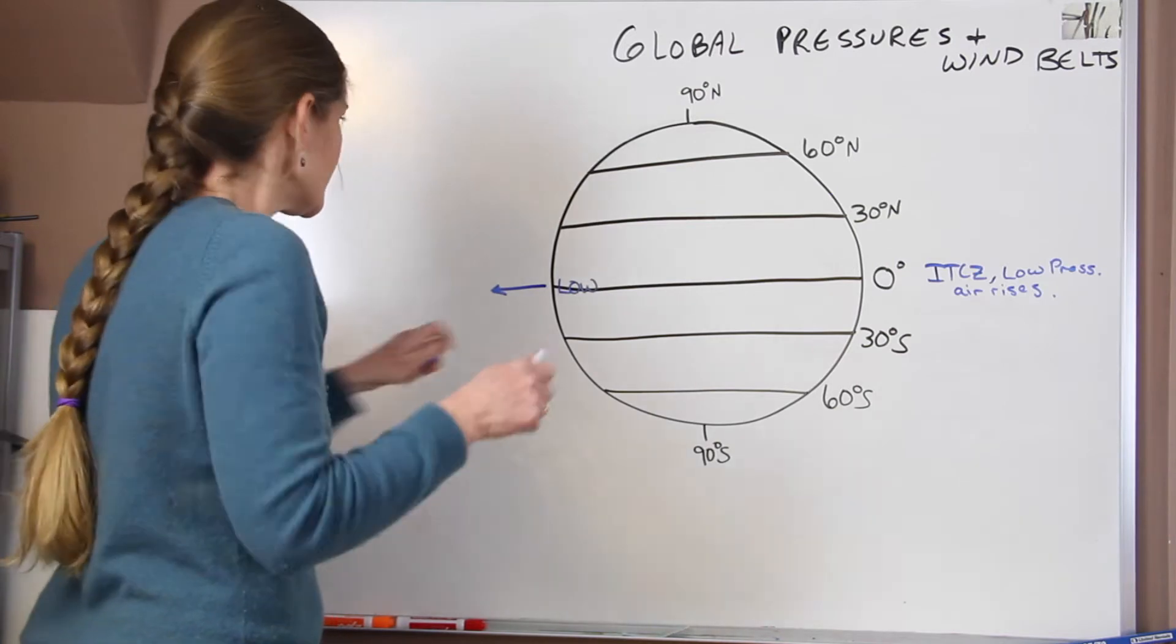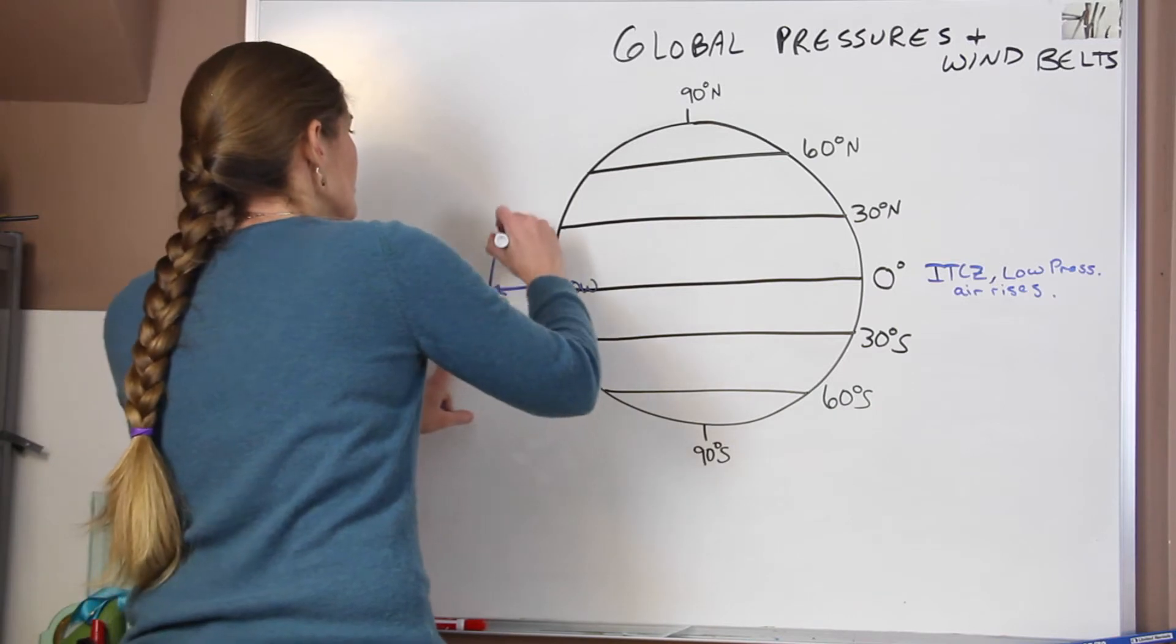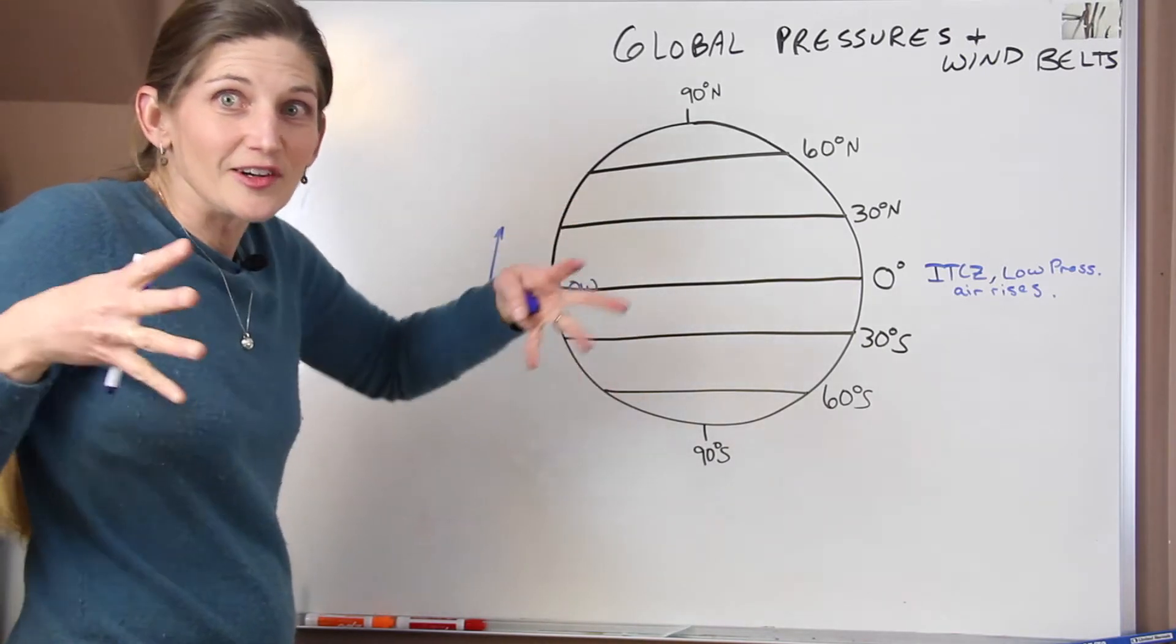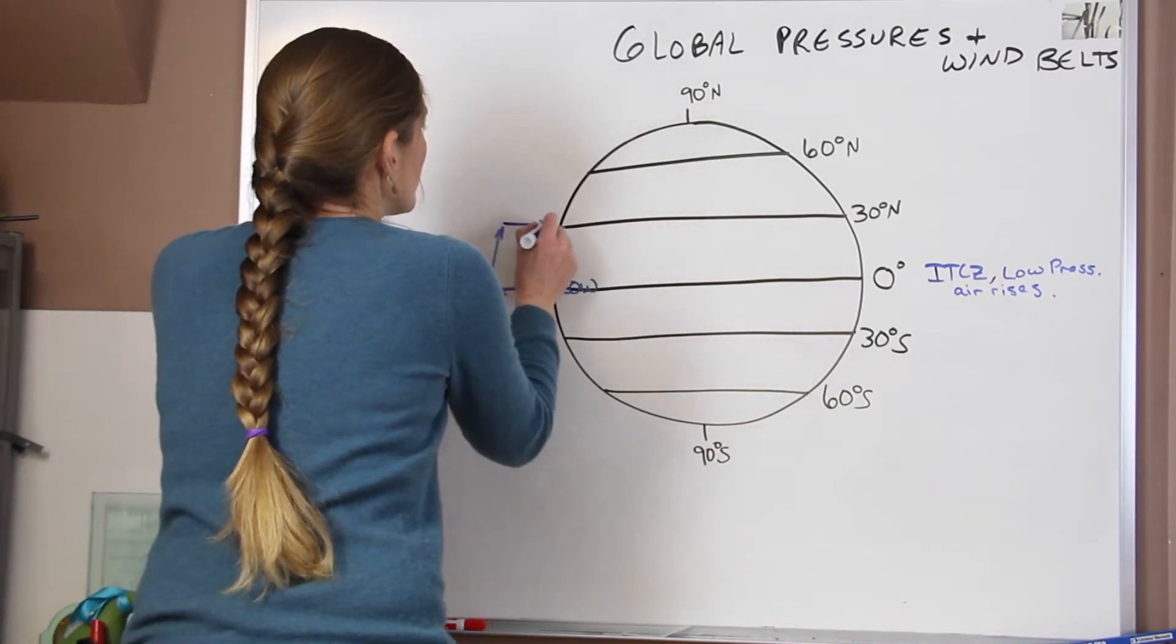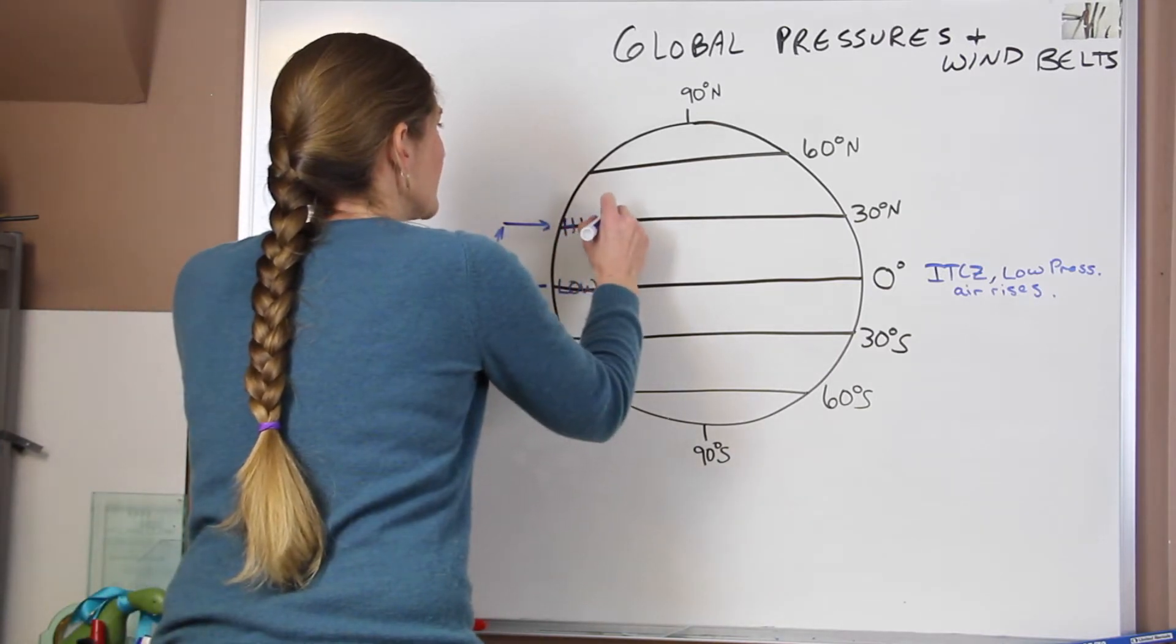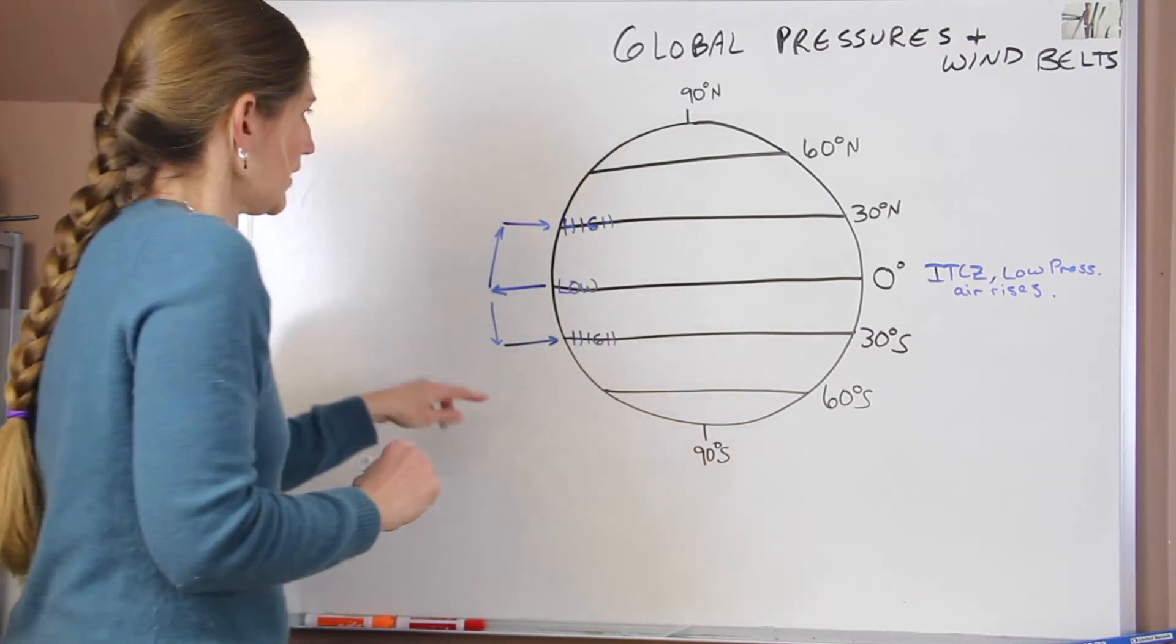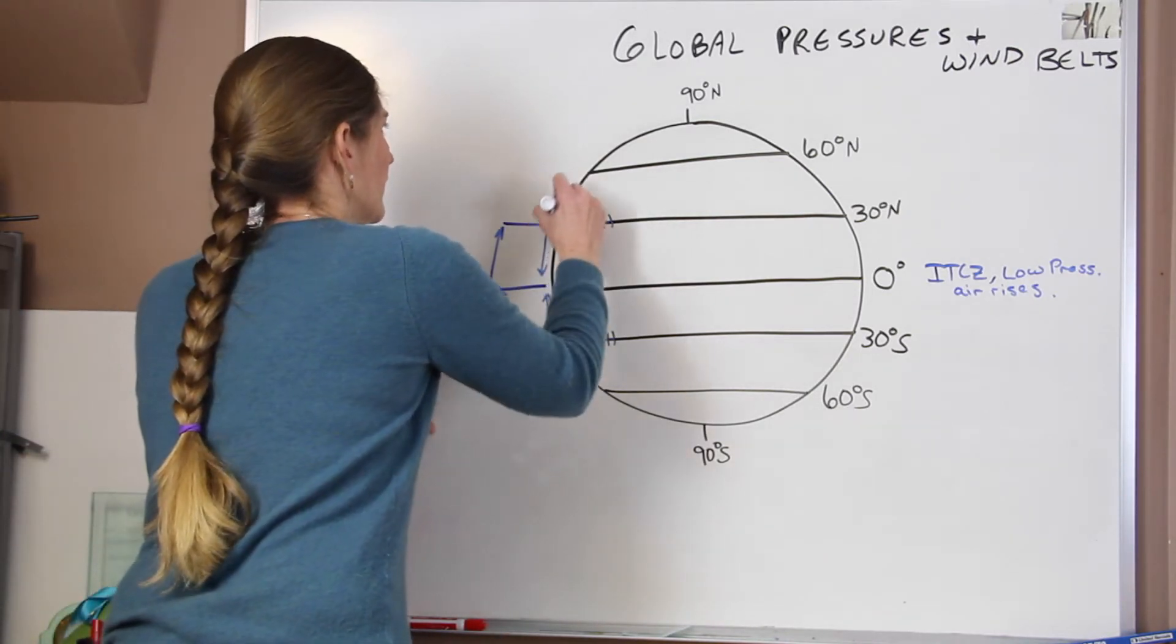As that air rises, we know it does cool. And then it's going to start to diverge until it's kind of moving along. As it diverges out, it cools even more, and it starts to get colder, denser, and it sinks. And it sinks above 30 degrees north latitude. And here we get the development of a high pressure.